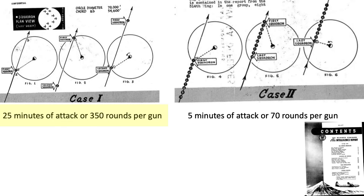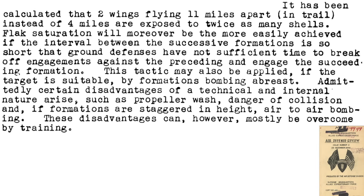The formation with trail distances of 15 miles were under attack for around 25 minutes, while the same formations with a reduced trail of 1 mile were under attack for around 5 minutes, or 20% as much. This page outlines some disadvantages of flying with a shorter formation trail, from a December 1944 Air Defense Division document titled Air Defense Review. Bombers flying in a 4-mile formation trail will experience half the flak threat as formations flying with an 11-mile trail distance.